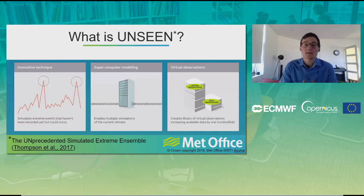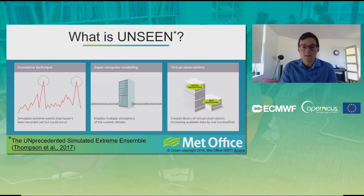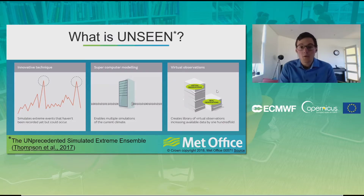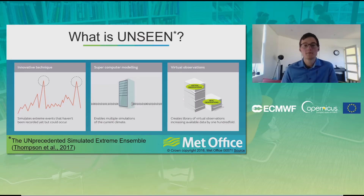That's where UNSEEN comes in. UNSEEN is a technique where we use many weather simulations to assess the occurrence of infrequent, unique events. Using real observations you might have 30 years of data, whereas using virtual observations you could increase this a hundredfold. By increasing the sample size, you can better estimate the risk of extreme events.